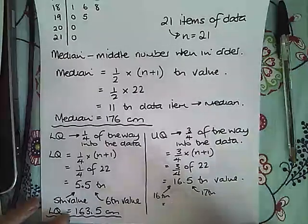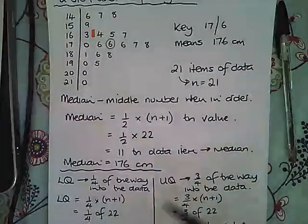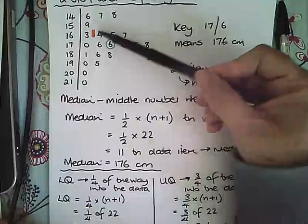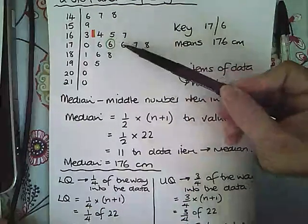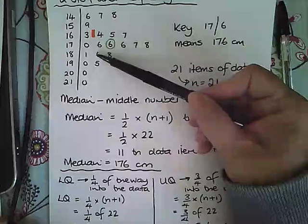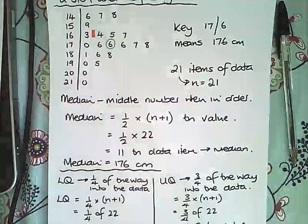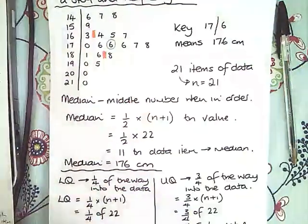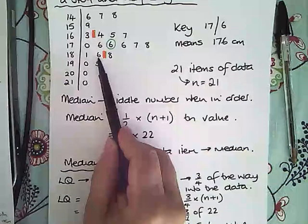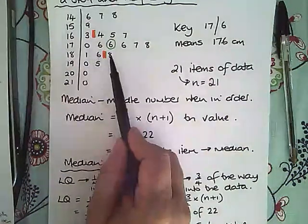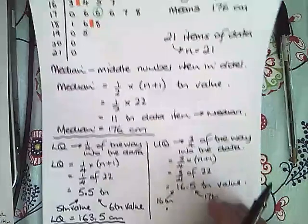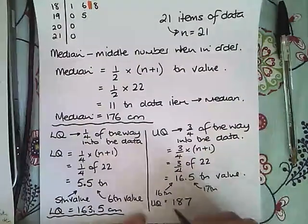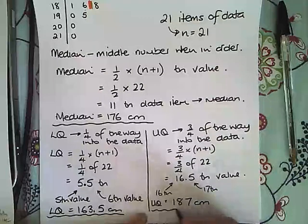So if we go back up to our stem and leaf diagram and count through till we get to our 16th and 17th value: 1, 2, 3, 4, 5, 6, 7, 8, 9, 10, 11, 12, 13, 14, 15, 16, 17. So we are looking for the value in between these two, so halfway between 186 and 188. That value would be 187, so the upper quartile would be 187 centimeters.